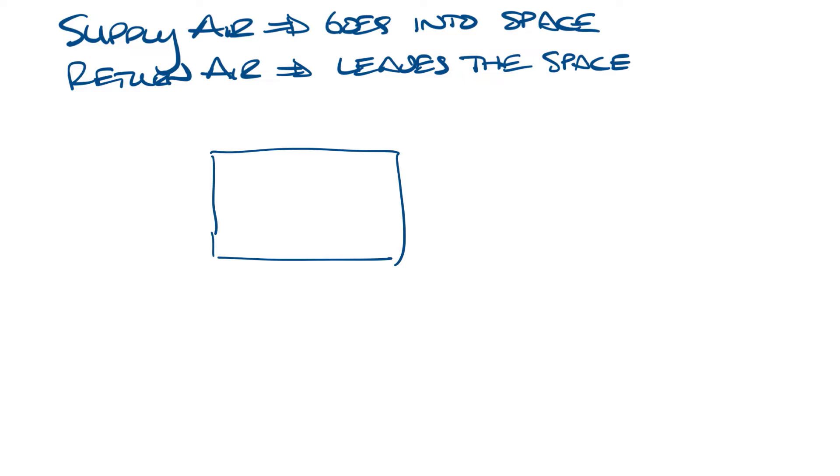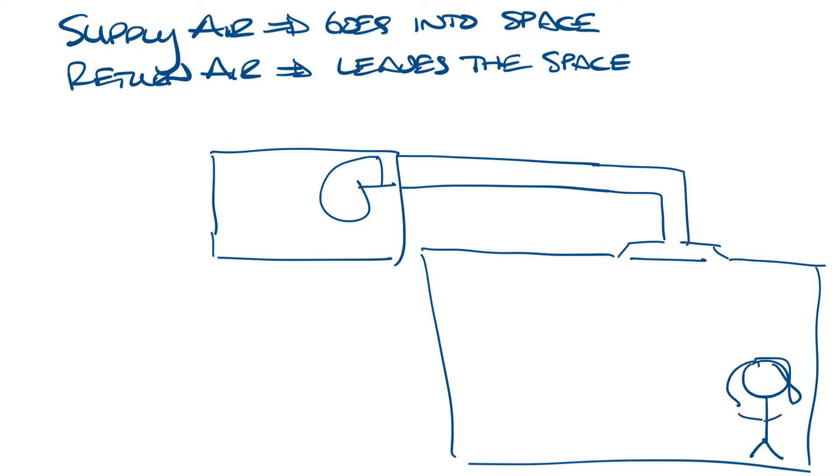So let's draw a quick little system here. This is the air handler with the fan supplying air into the ductwork and it eventually goes through a diffuser and into the office that you're in. Now obviously I left a lot of the system out, but let's also put in a return.